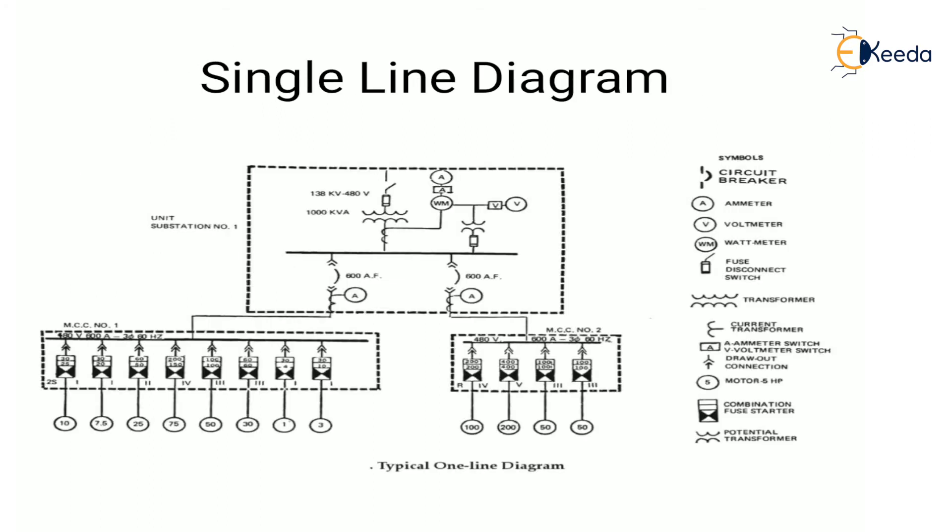Single line diagram represents how the power is distributed from source to the end user. It is a simplified notation for representing a three phase power system. Electrical elements such as transformer, circuit breaker, bus bar are shown by standard symbols, and instead of representing each of the three phases with separate lines, only one conductor is being represented.